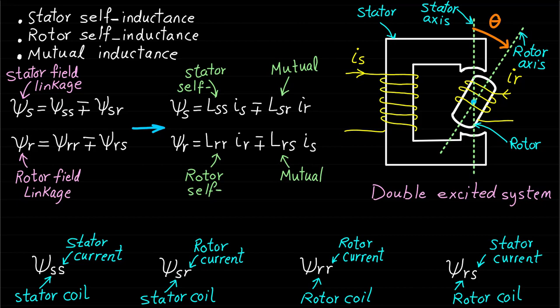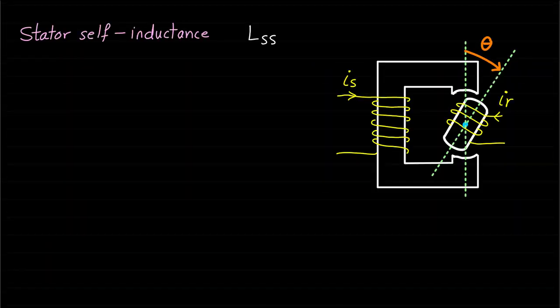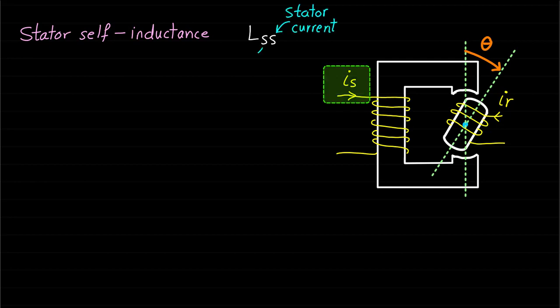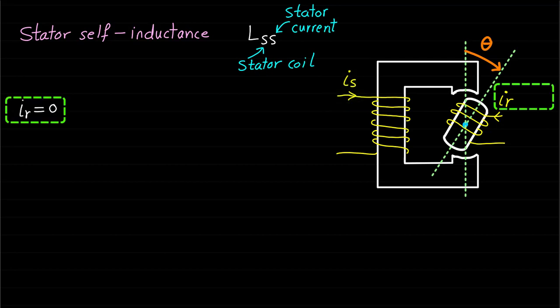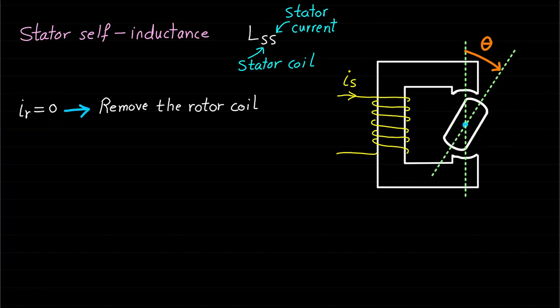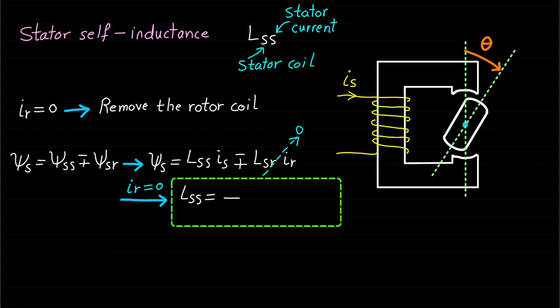Let's first explain the stator self-inductance LSS of this double excited system. The stator self-inductance LSS represents the inductance of the magnetic field produced by the stator excitation current IS only and links the stator coil. The rotor current IR is zero during the calculation of the stator self-inductance. So we can remove the rotor coil for now because it is not contributing to the stator self-inductance. The stator self-inductance can be calculated as: LSS equal to Psi-S over IS at IR equal to zero.